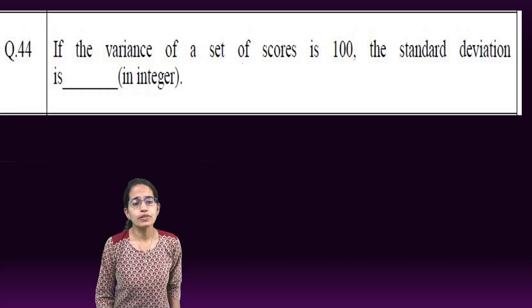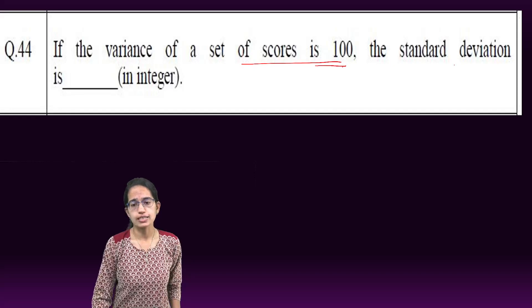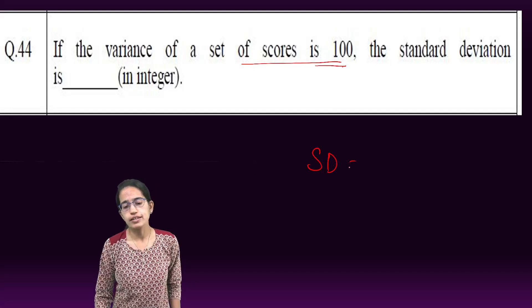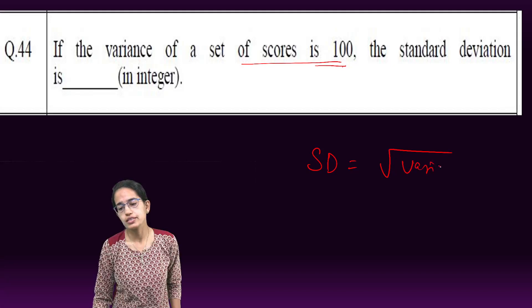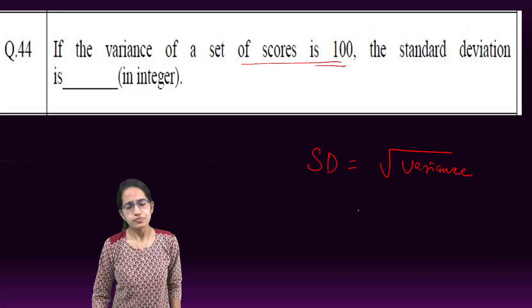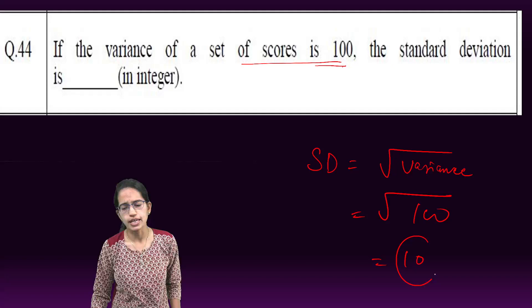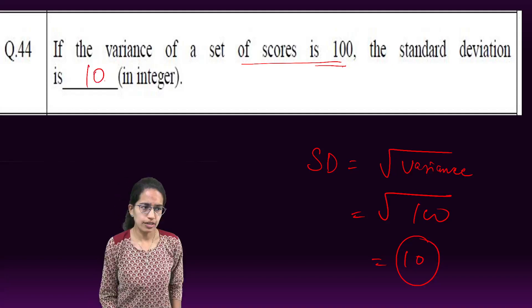If the variance of a set of scores is 100, the standard deviation is: standard deviation is simply root of variance, a fundamental concept in statistics. Root of 100 which becomes 10. This is a numeric question and the correct answer here would be 10.